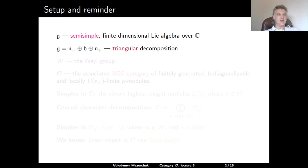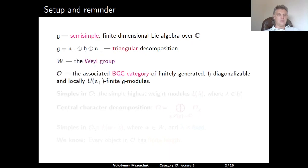G equals N-minus plus H plus N-plus, where H is a fixed Cartan subalgebra. N-plus is the nilpotent subalgebra corresponding to the choice of positive roots, and N-minus is the corresponding negative subalgebra, which is a direct sum of root subspaces for negative roots. We denote by W the Weyl group of G. The associated Category O is a full subcategory of finitely generated G-modules which are H-diagonalizable and on which the universal enveloping algebra of N-plus acts locally finitely.